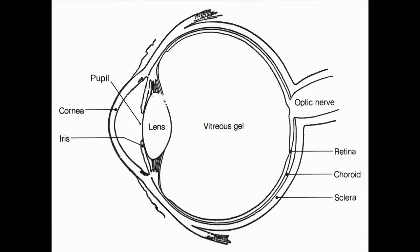Inside, our eyes are made up of three different layers: the sclera, the choroid, and the retina. Within these layers we can find other parts such as the cornea, pupil, iris, lens, optic nerve, and vitreous gel.